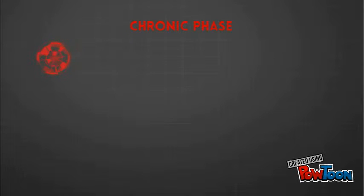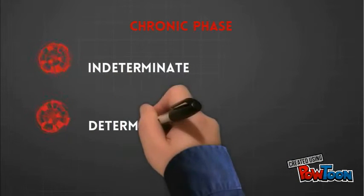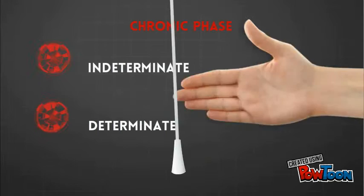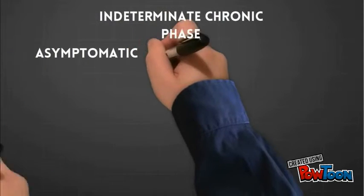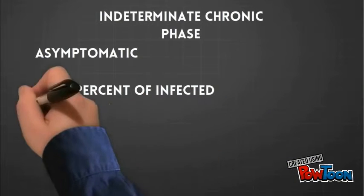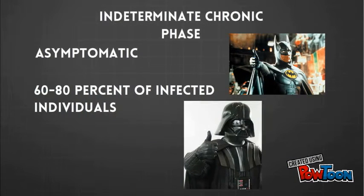Regardless of treatments, the disease eventually moves to the chronic phase in two forms: indeterminate and determinate. The indeterminate chronic phase, also referred to as the asymptomatic phase, affects 60 to 80% of infected individuals, essentially leaving them completely disease-free.